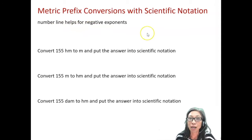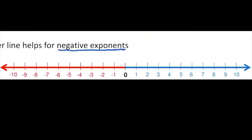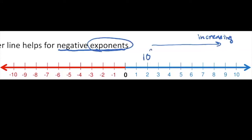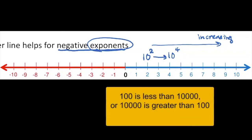A number line is really helpful for negative exponents. On a number line, going to the right means values are increasing. The exponent is that small raised number — for example, the 2 in 10 squared. 10 squared equals 100, which is less than 10 to the 4th, or 10,000. So 10,000 is greater than 10 to the 4th, which is greater than 10 squared, which is 100.